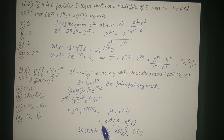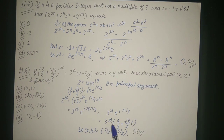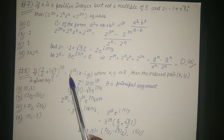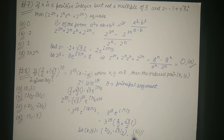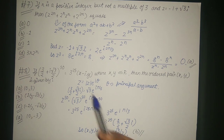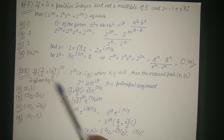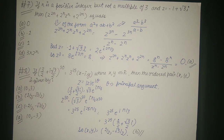Therefore z^50 = 3^25·(1/2 + (√3/2)·i). Comparing with 3^25·(x - iy), we get x = 1/2 and -y = √3/2, so y = -√3/2. The ordered pair (x, y) = (1/2, -√3/2), which matches option B.